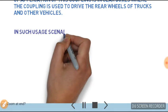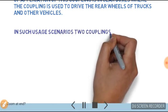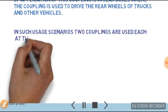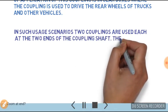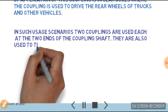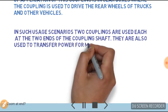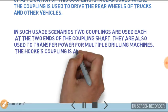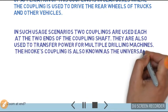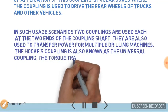In such usage scenarios, two couplings are used, each at the two ends of the coupling shaft. They are also used to transfer power for multiple drilling machines. The Hooke's coupling is also known as the universal coupling.